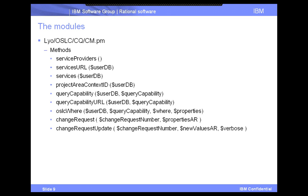Similarly for ClearQuest, there's the same set of service provider style methods and query capability including the OSLC where method — those would generally apply to any OSLC provider. In ClearQuest, their main record type is called change request. ClearQuest does have lots of other different record types, but the main one for defect tracking is change request. I have an API to request a specific change request and correspondingly to update one once you have it.